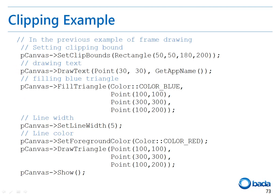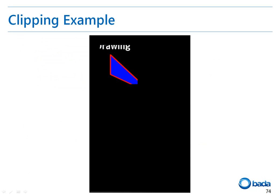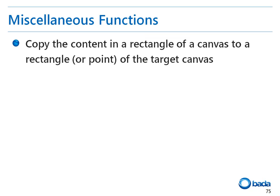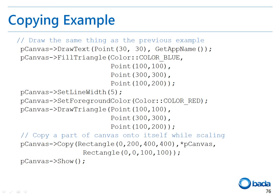This example shows the role of clip bounds for the canvas. If we specify a clip bounds by using the setClipBounds function and draw an object beyond the boundary of the clip bounds, we can only see the parts of the object within the boundary of the clip bounds. The canvas also provides a function to extract a part of the canvas and copy it to another area. By resizing the rectangle, you can implement a magnification or shrinking effect.